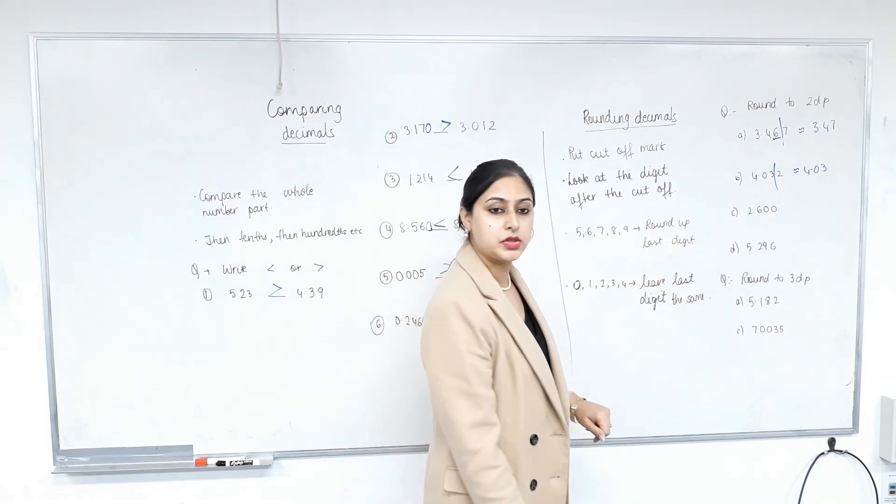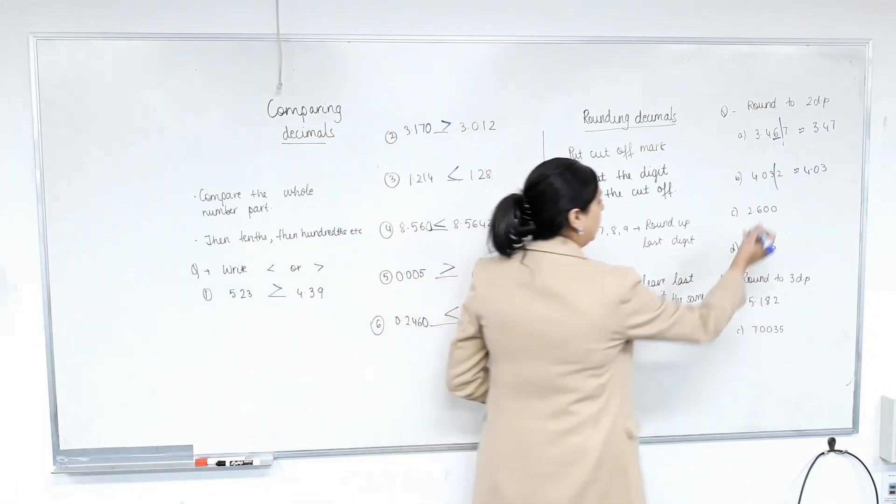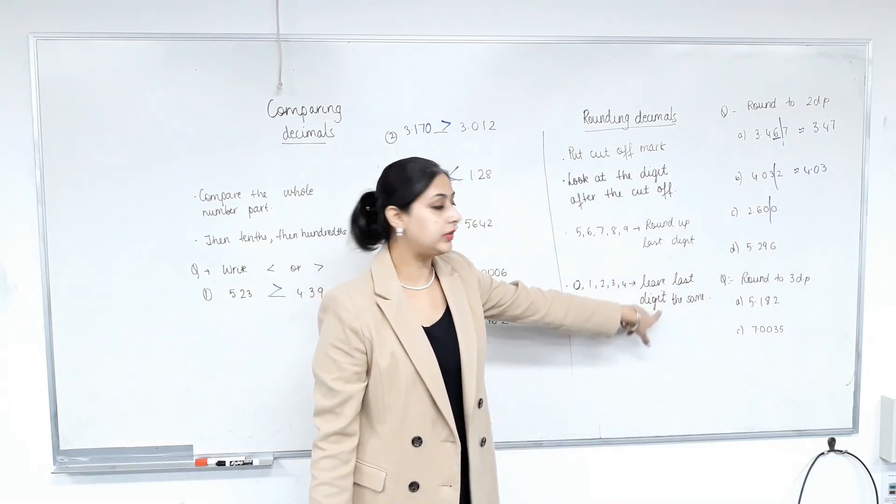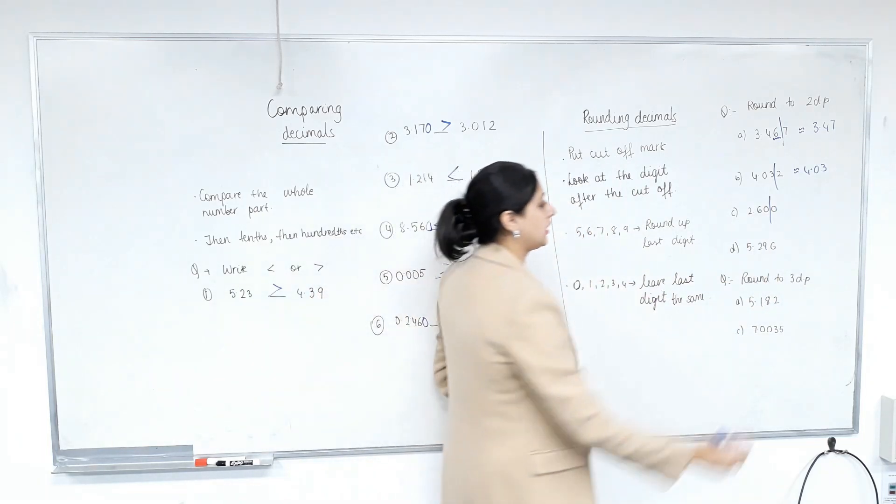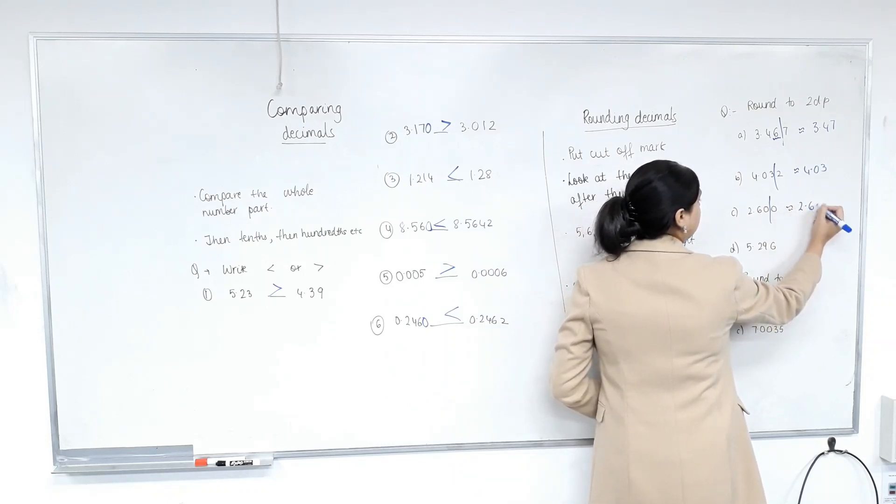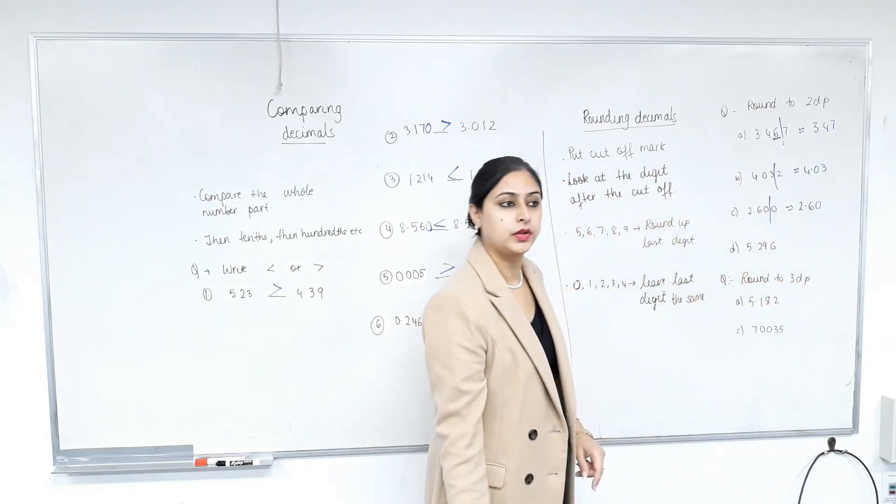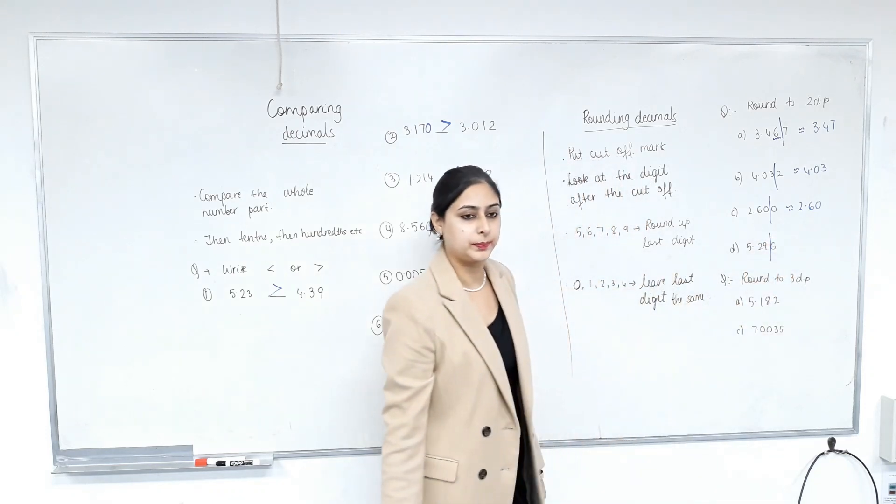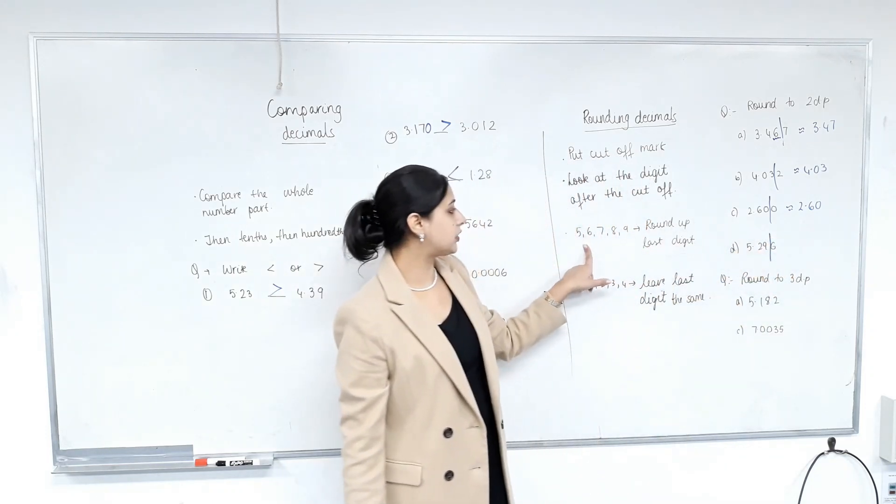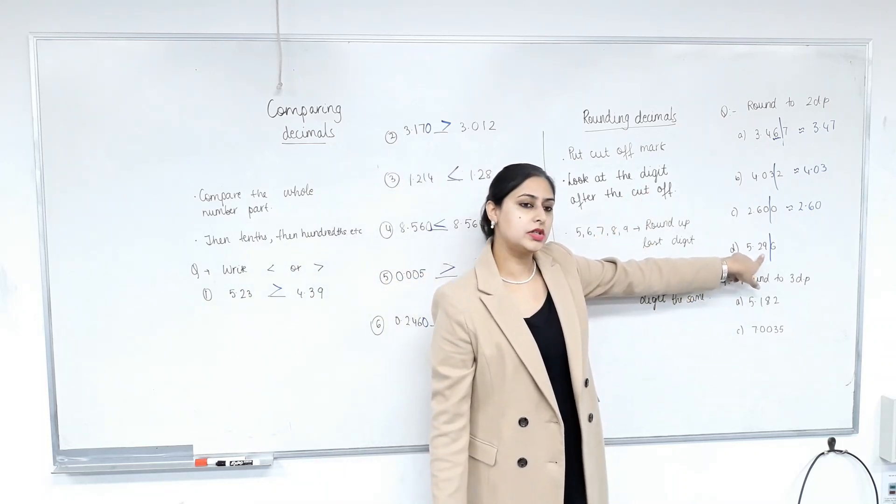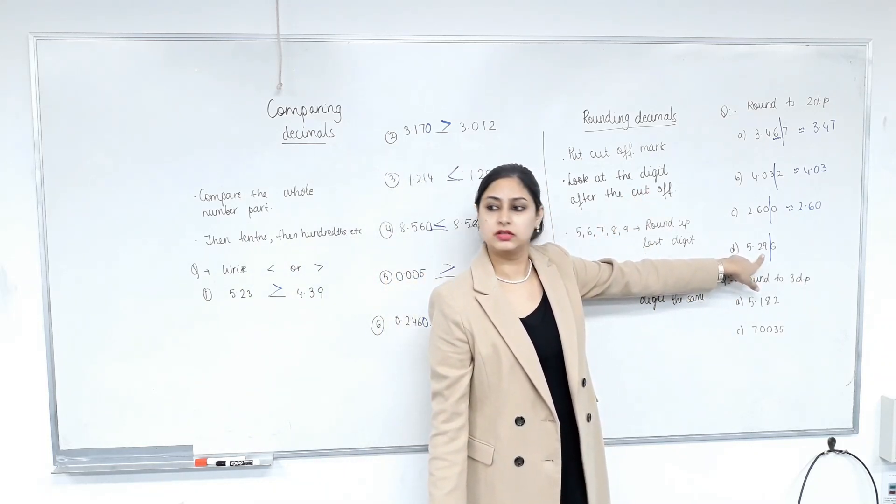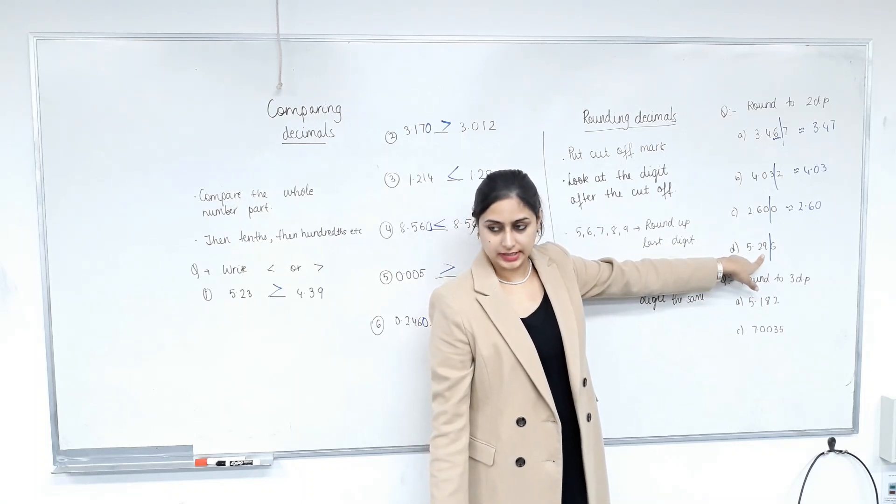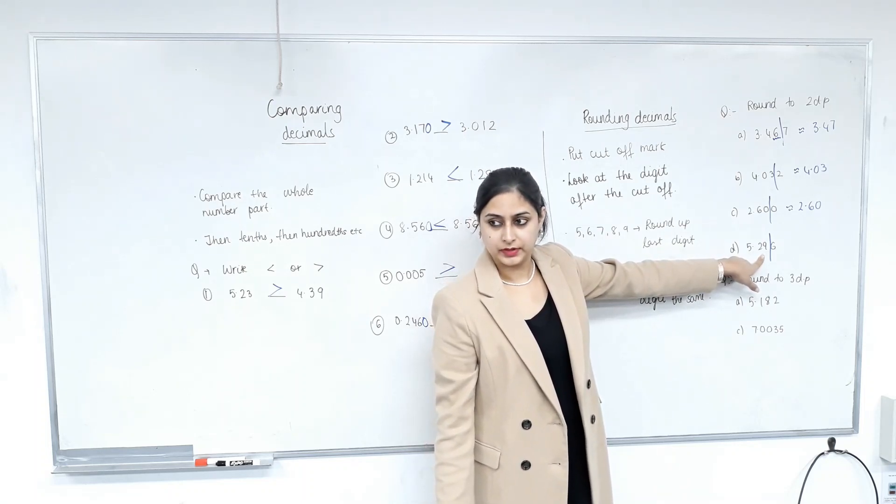Rounding to two decimal places. Eyes on the board. Cutoff mark. The digit after the cutoff is zero. So we leave the last digit as six. So two point six zero. Cutoff mark. Two decimal places. This is a tricky one. So this is six. So we round up the last digit. So nine becomes ten. How do I write ten? You put, like you have to go along the number line further, so you make it five point three zero. Well done.